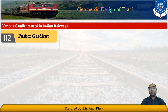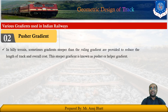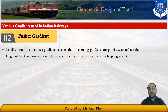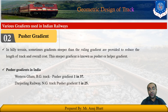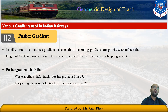The second type is the pusher gradient, also known as the helper gradient. In hill terrain, gradients steeper than the ruling gradient are sometimes provided to reduce the length of track and overall cost. In such situations, one locomotive is not adequate to pull the whole train, so an additional locomotive is used as a helper to push the train past that gradient. In Indian Railways, on the Western Ghats broad gauge track the pusher gradient allowed is 1 in 37, while on the Darjeeling Railways narrow gauge track it is 1 in 25.